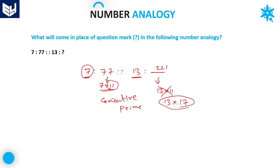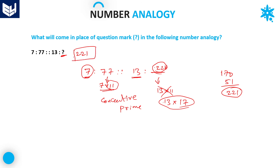You can directly calculate using 13 into 170, which gives 221. Again, 3 more times: 17 into 3 is 51. If you add these two, 170 plus 51, you get 221. In this way, you can easily calculate the answer. So, in place of this question mark, our answer should be 221. Guys, I hope you enjoyed the session. Thank you very much for watching.